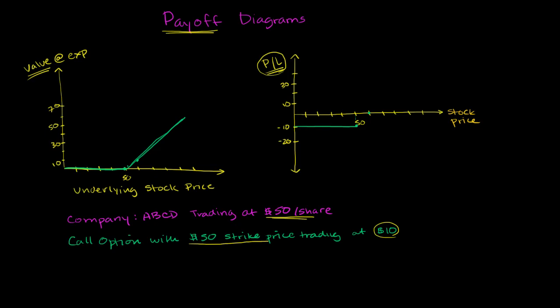But of course, you had to spend $10 on the option. So there, you are breakeven. But then as you get above a $60 stock price at maturity, then all of a sudden, you start to make money.